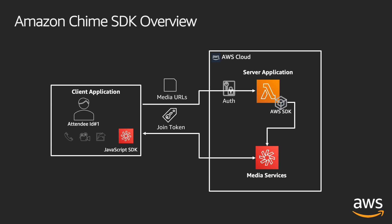The client application that embeds the client SDK will use the meeting identifier, media URLs, and join token to authenticate with the media services and join the meeting session with audio, video, or screen sharing. The client application uses a combination of secure WebSockets and DTLS through WebRTC peer connections to send and receive media to and from other attendees using the media services.